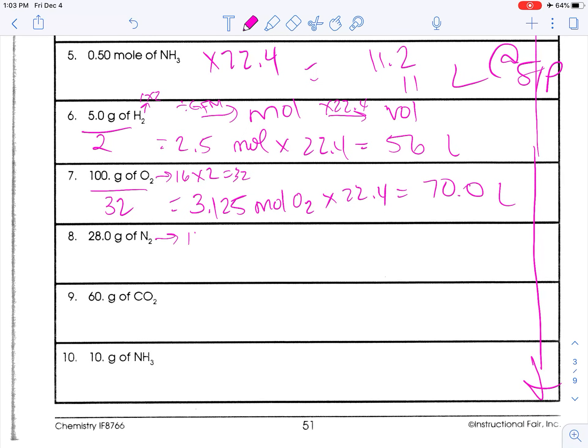Diatomic nitrogen. This is 14 times 2. So, that's 28. 28.0 divided by 28 is 1 mole. Times 22.4. So, make sure you have three sig figs. We do.